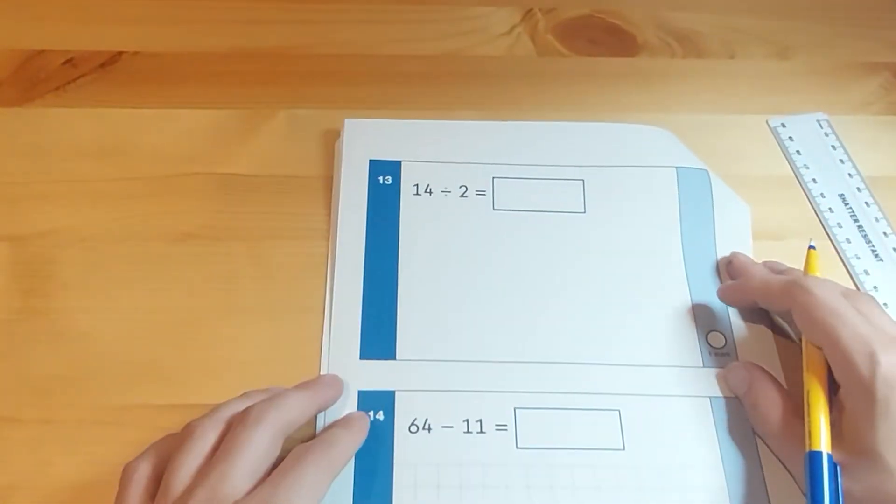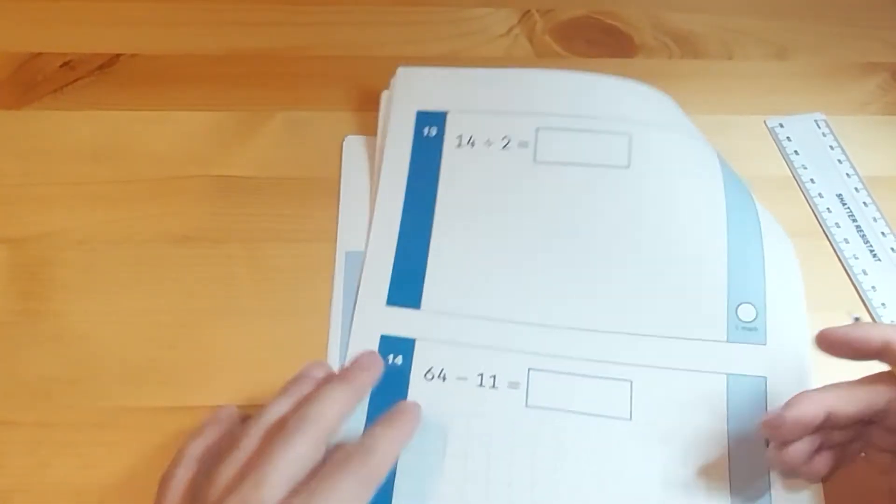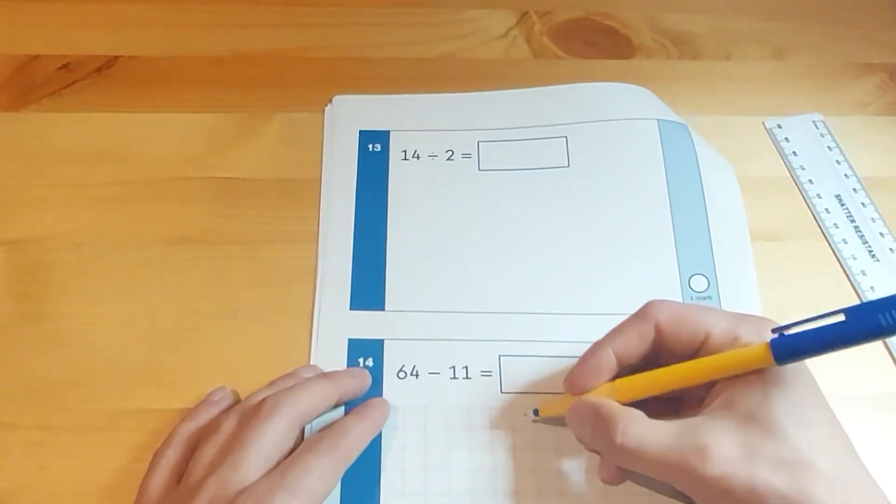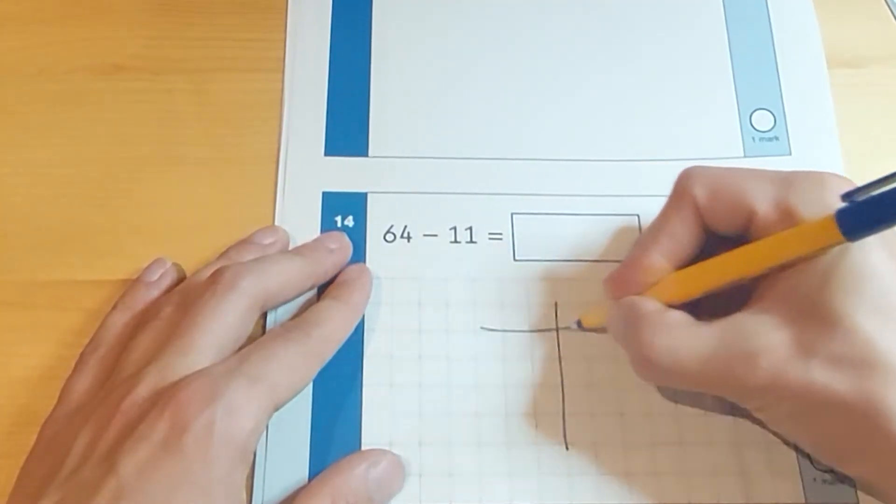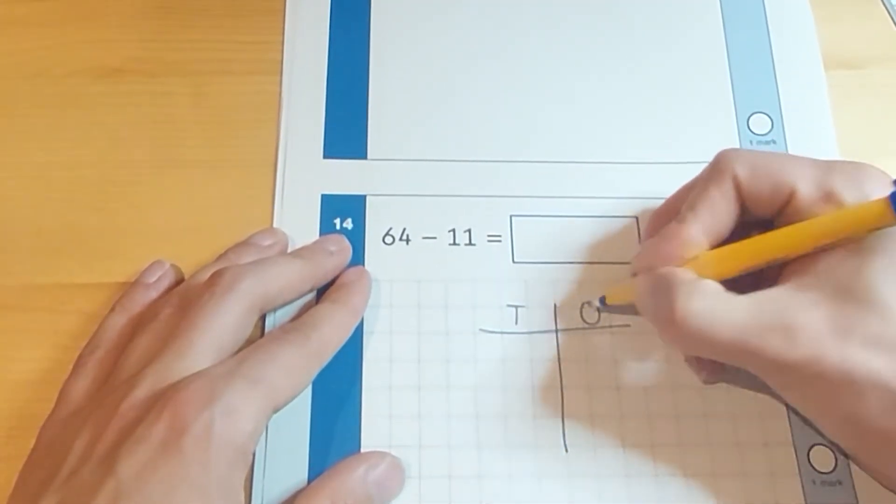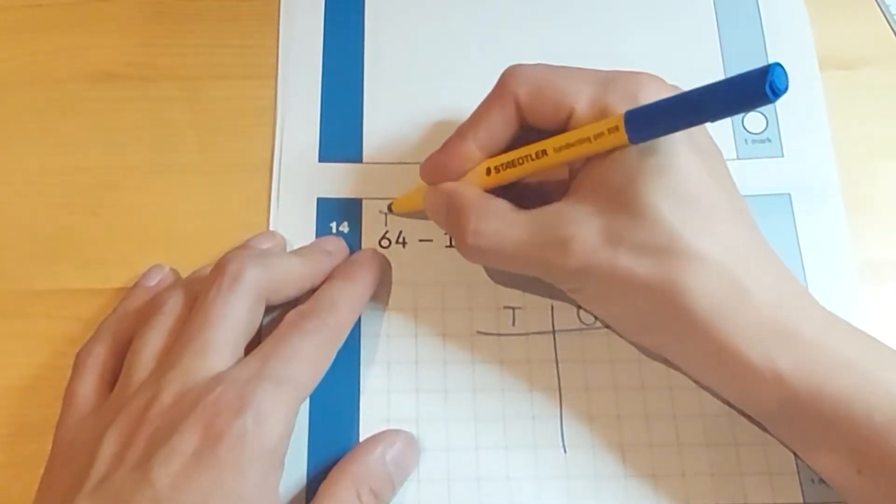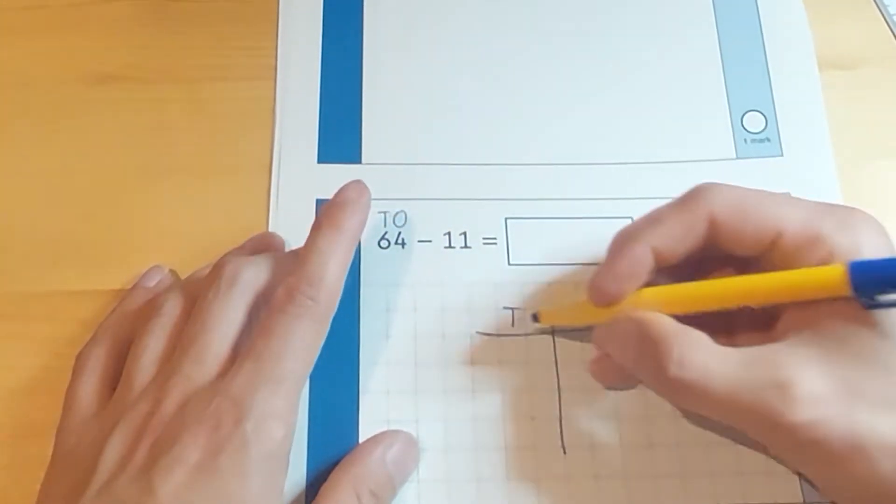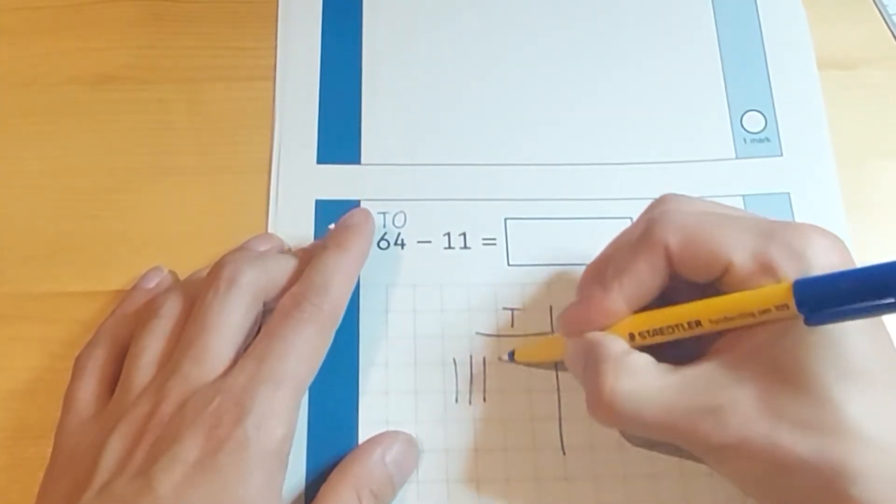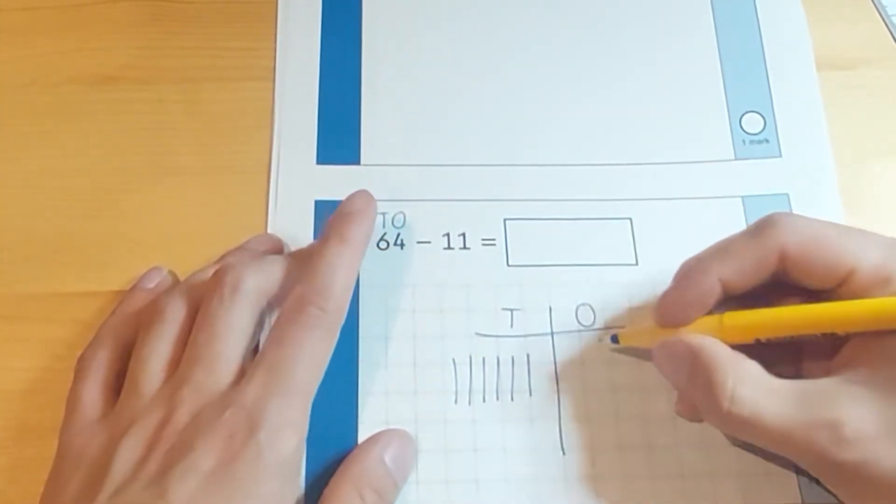So with this question, 64 take away 11, a perfect question for the written method. Step one, get them to draw the grid. Tens and ones. Step two, we're drawing the biggest number first. How many tens and how many ones does it have? Six tens. 10, 20, 30, 40, 50, 60 and four ones.